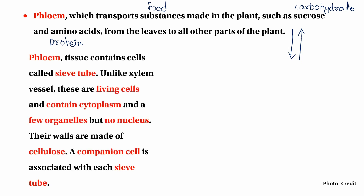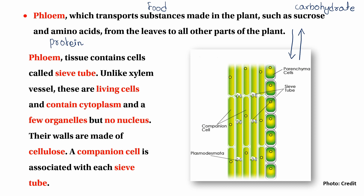Phloem tissue contains cells called sieve tube elements and companion cells. Companion cells support sieve elements, carrying out metabolic functions and regulations. They carry sugar, amino acids, and other organic substances. Companion cells have dense cytoplasm.